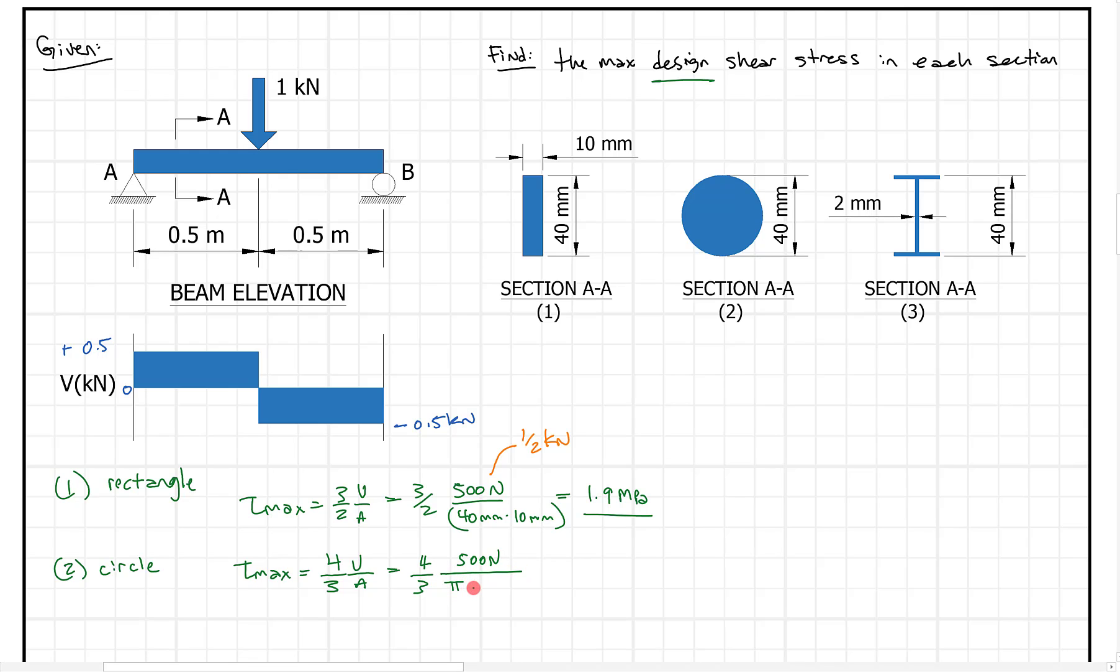And then we can divide this by the area. I'm going to write the area as pi times R squared. In this case, if 40 is the diameter, then we know that R is going to be 20 millimeters. So pi times 20 millimeters squared. If I plug those numbers in, I get about 0.53 megapascals. So a smaller number, but what we know here is this has a lot more area in the circle than our rectangle does.